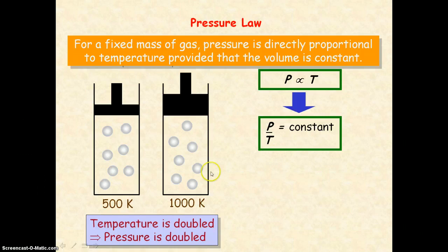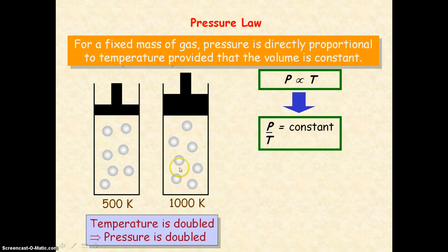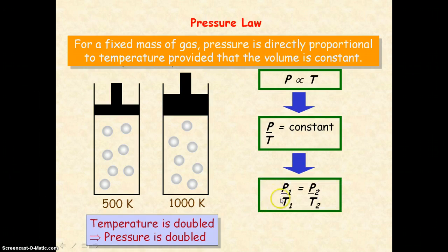If the temperature is changed from T1 to T2 and the volume has been kept constant, then the pressure will change from P1 to P2. Because P divided by T equals a constant, we can say that P1 divided by T1 will equal P2 divided by T2, as both of these equal a constant when the volume has been kept constant and we're looking at a fixed mass of gas.